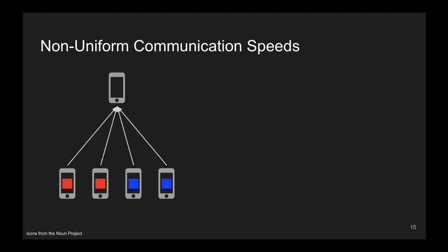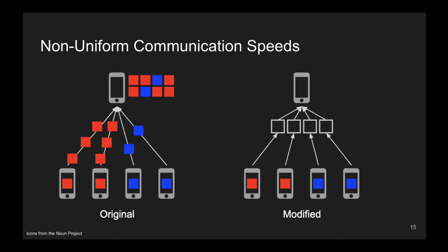We then proceeded to see what happens when the communication speeds of the nodes are not uniform. What we noticed is that if some nodes are much faster than others, and if the faster nodes have a different data distribution than the slower nodes, in this case red versus blue, each receiving node will see a sample skewed towards the red faster nodes.